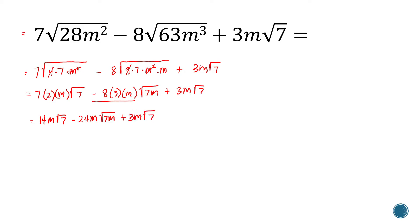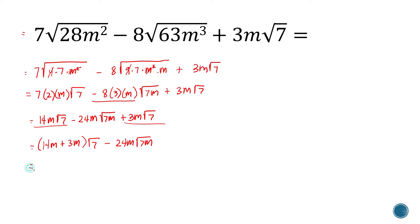Now that all radicals are in simplified form, we can only combine the like radicals. So 14m plus 3m square root of 7, minus 24m square root of 7m. That's 17m square root of 7 minus 24m square root of 7m.